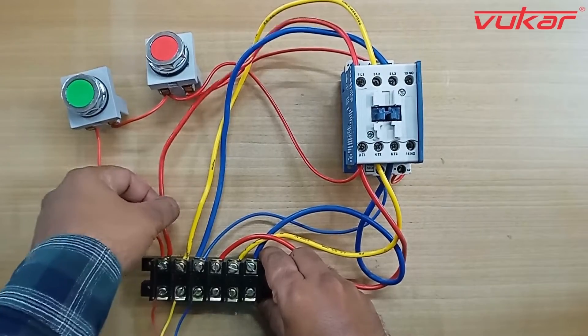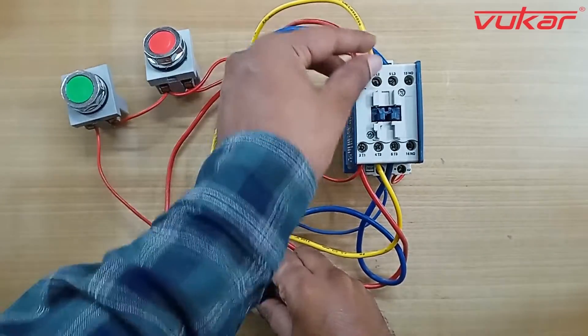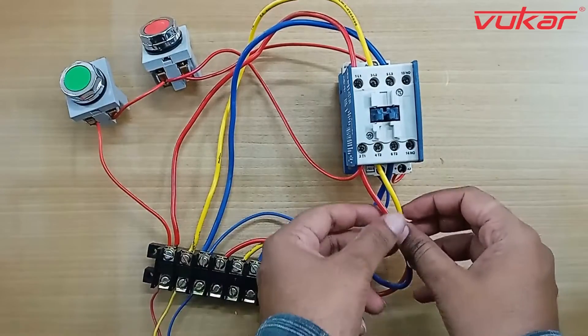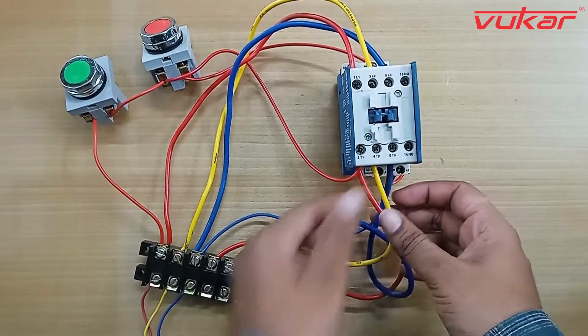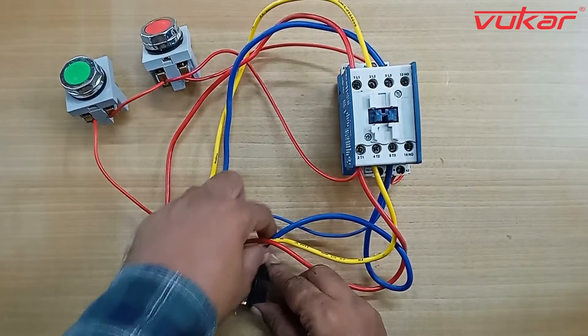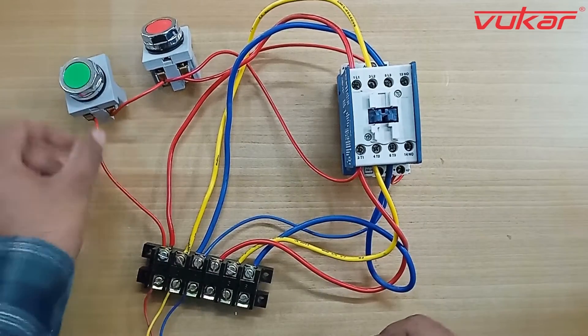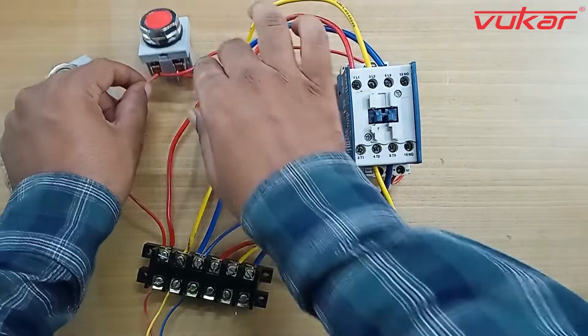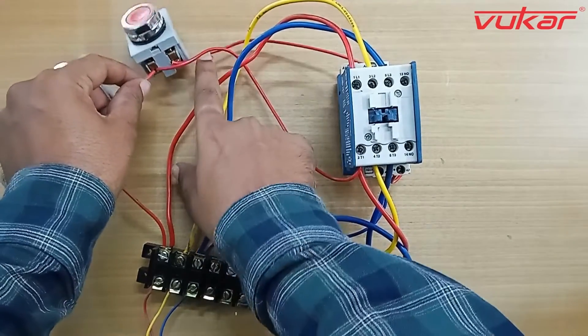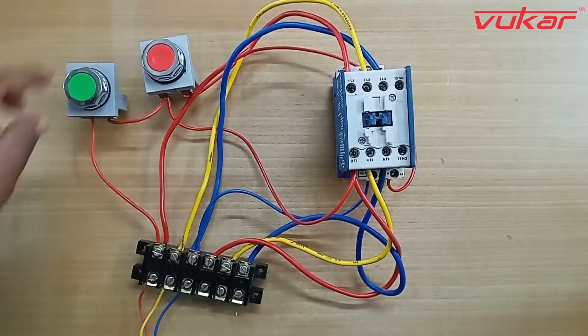Now connecting the control wires as explained before, you can also see that the input terminal and output terminal of the contactor, 2.5 square mm wire or 4 square mm wire is used. For control wiring, you can use 0.5 square mm wires.